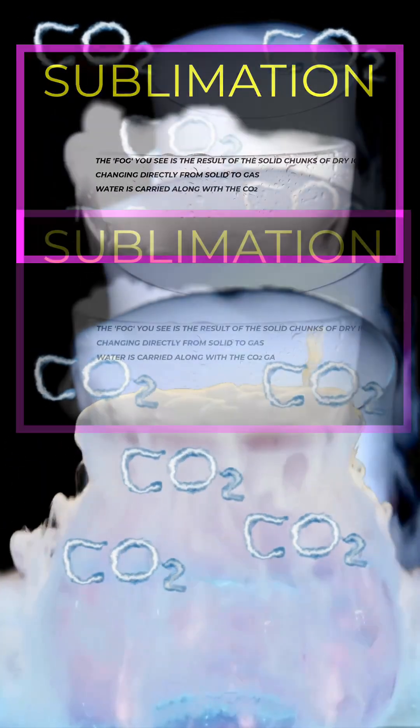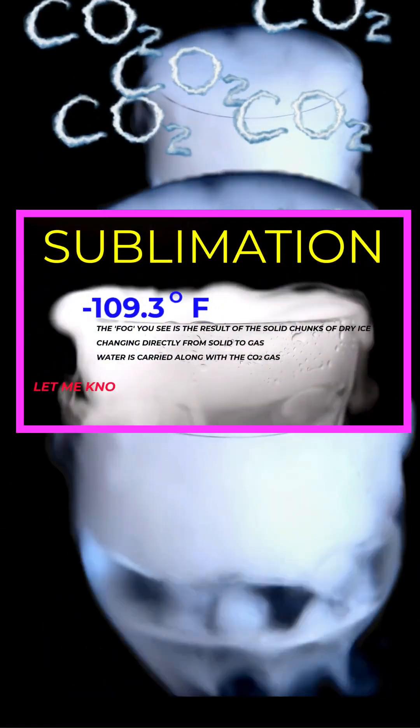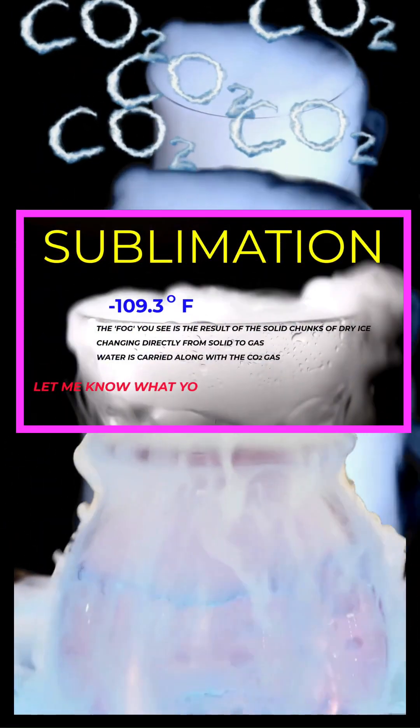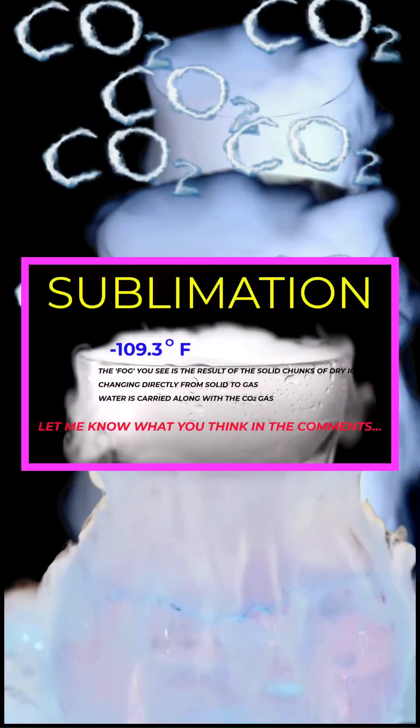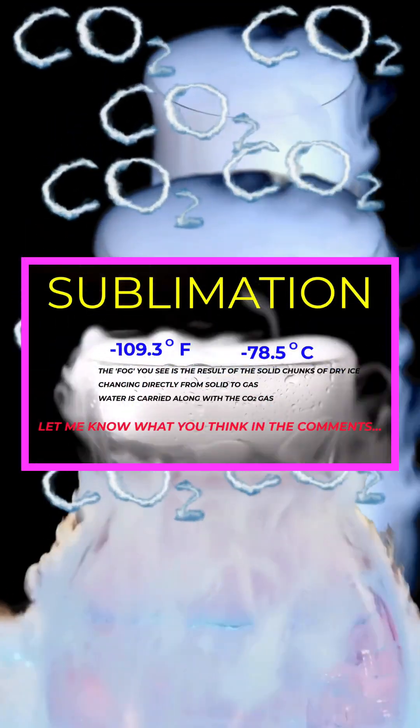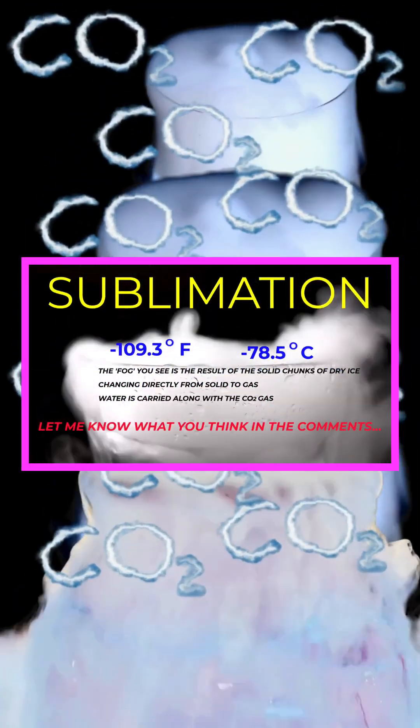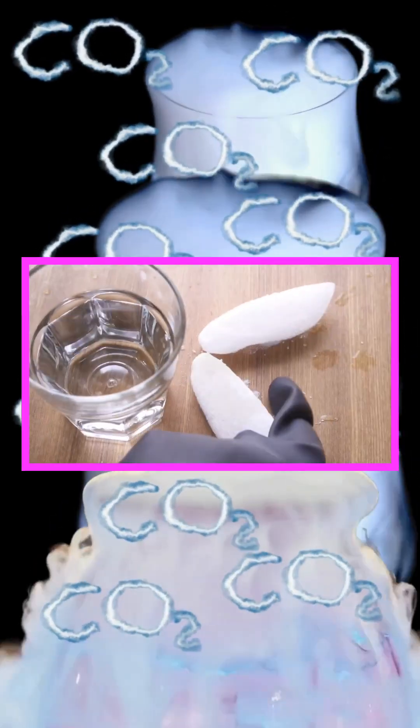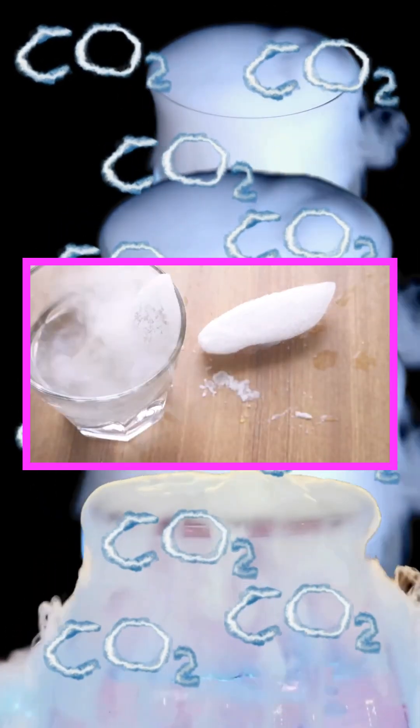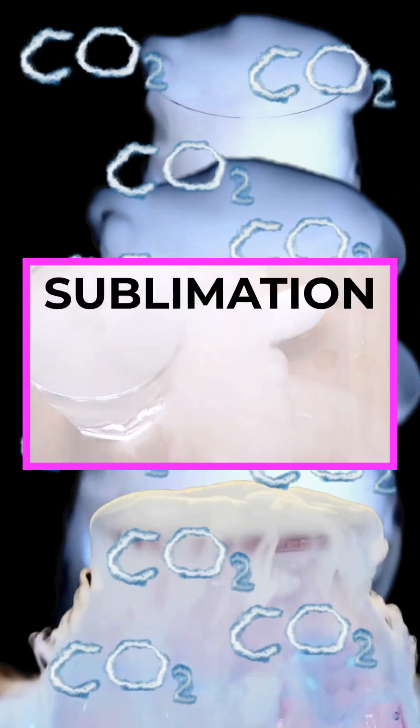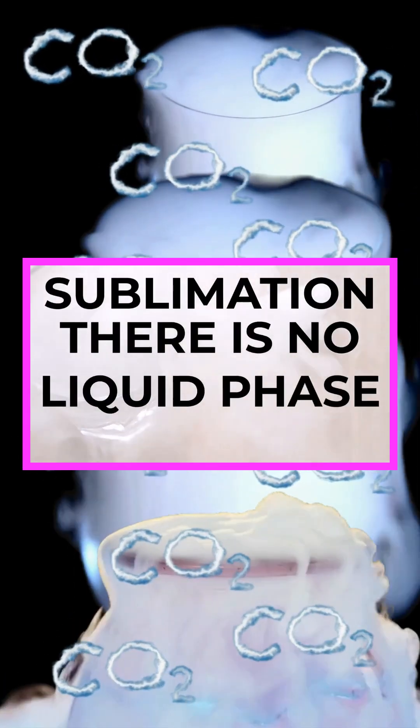At its surface temperature of approximately minus 109.3 degrees Fahrenheit or minus 78.5 degrees Celsius, a frozen block of dry ice transforms directly into a gas, skipping the liquid phase entirely.